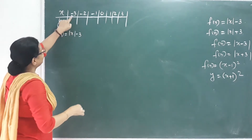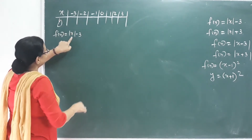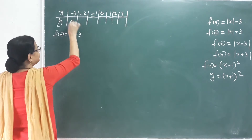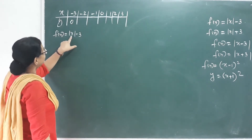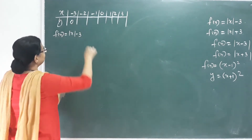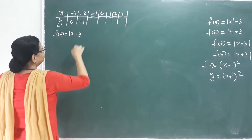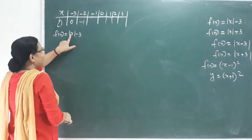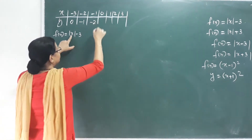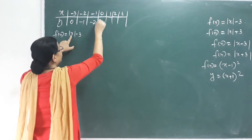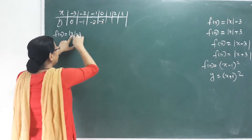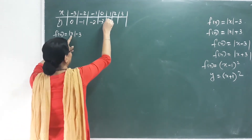I have x equals negative 3, so f(x) equals minus 3 minus 3 which gives 0. For x equals negative 2, I have minus 2. For x equals negative 1, I have minus 1. For x equals 0 minus 3, and here 6 minus 3, 1.